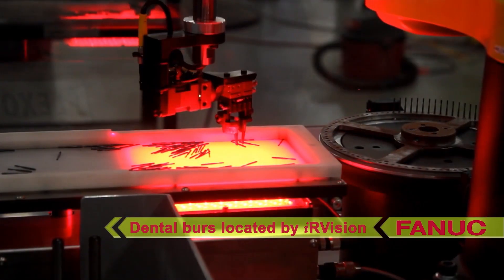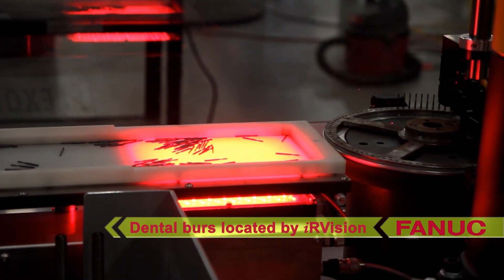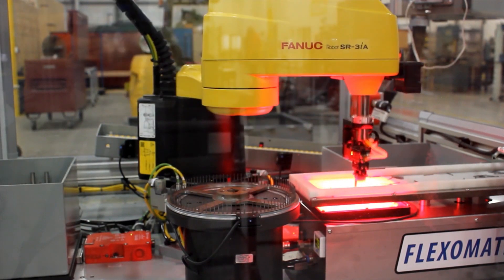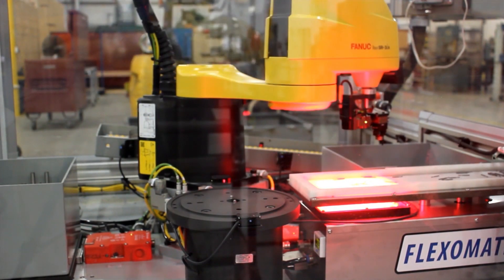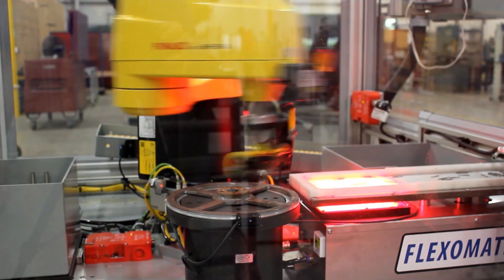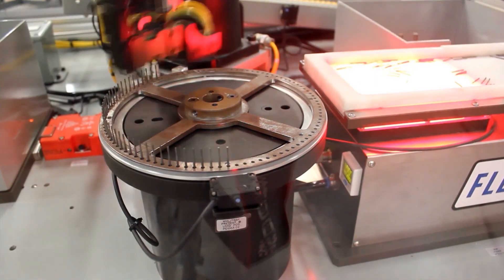After the dental burrs have been loaded into the fixture, the SR3IA robot places it onto an outgoing conveyor. It then picks a new fixture model from a nested drawer and places it onto the work table to begin loading burrs that fit the fixture.